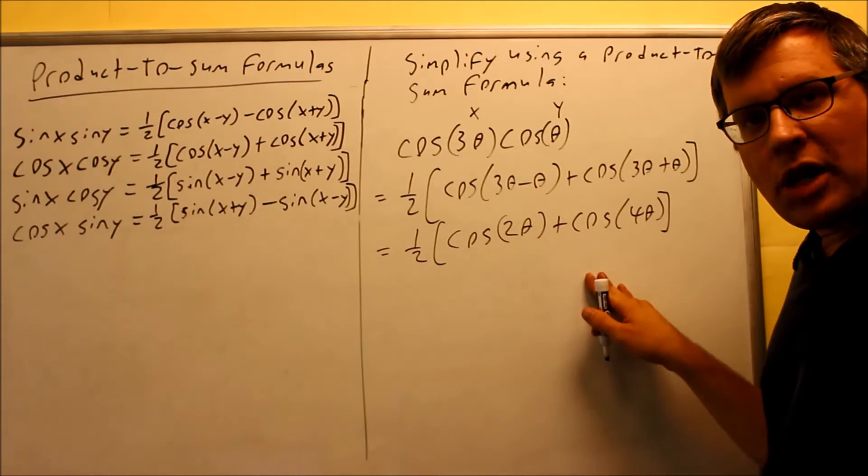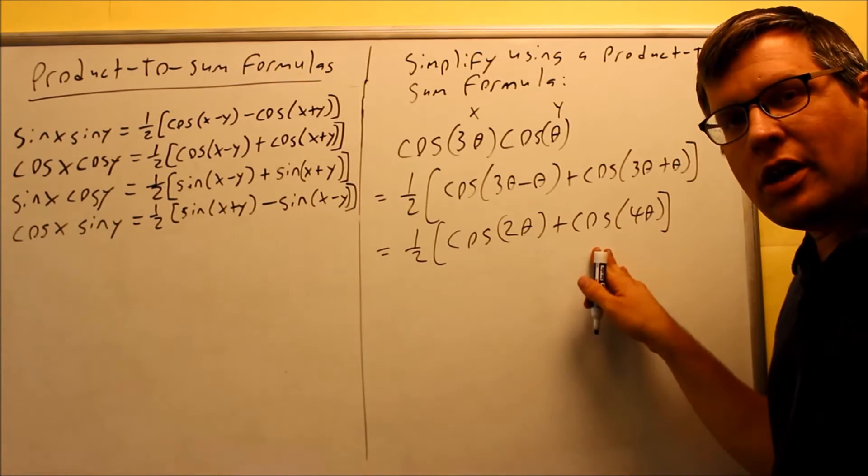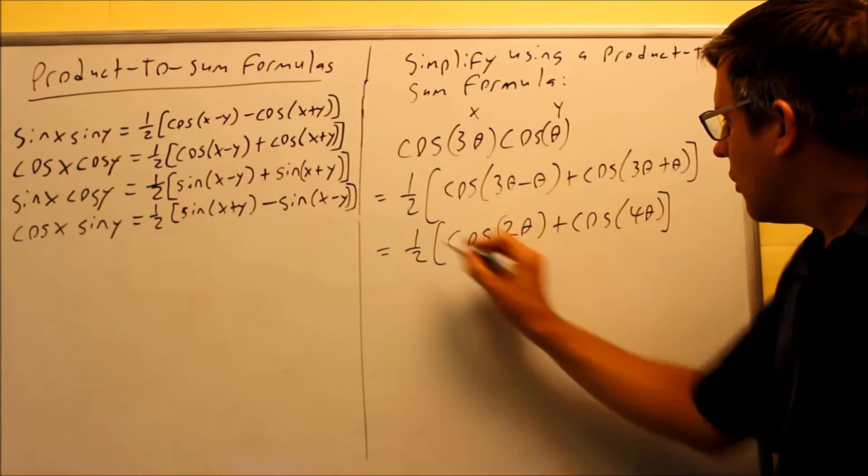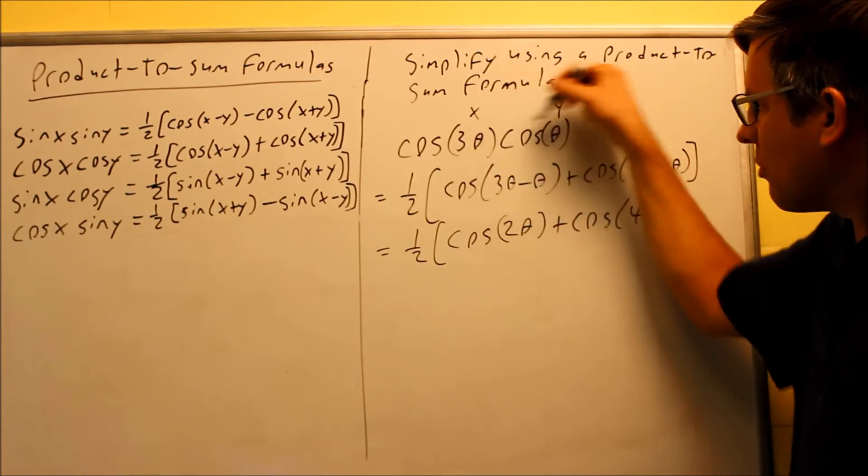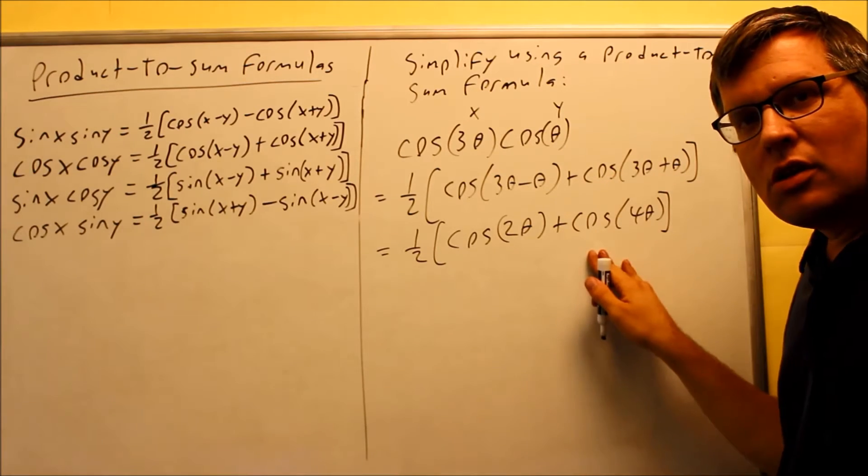Cosine 2 theta plus cosine 4 theta. These are not like terms. We can't combine these together. We don't need to put in any more identities for this. They just want you to break it down into here. So, we've taken something that's a product, we've turned it into a sum.